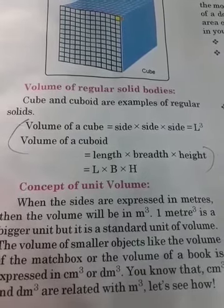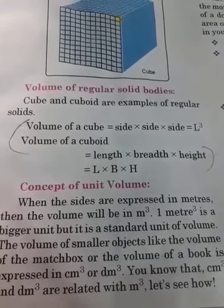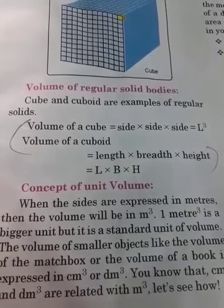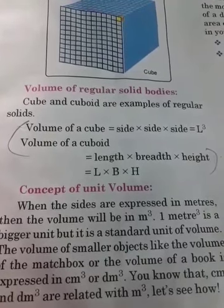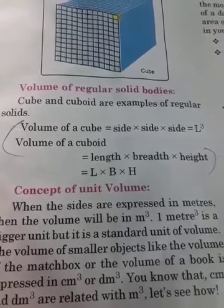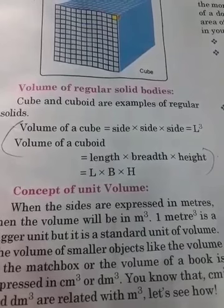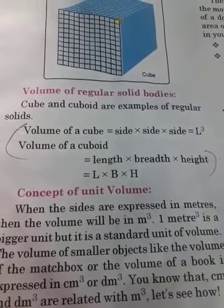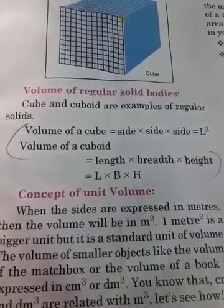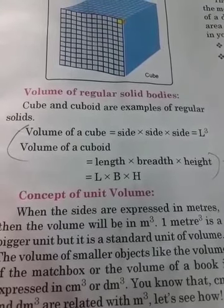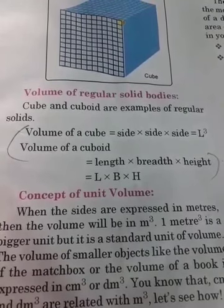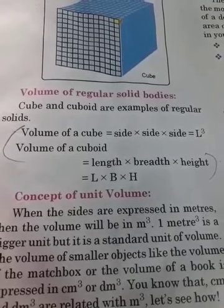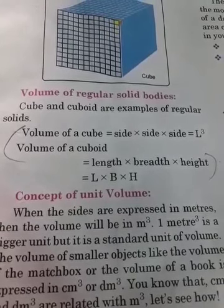Now we will study about two different things: regular body and irregular body. A regular body is a body which has got a definite length, breadth, and height. In other words, you can easily measure the length, breadth, and height of the object, and thus we can calculate the volume of a regular body by measuring these three dimensions.